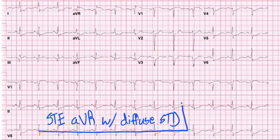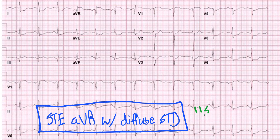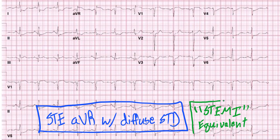Now everyone's eyes are darting to the different leads, and you may have noticed some of these findings. Although there are conflicting opinions on this term, people refer to this as a STEMI equivalent — ST elevation myocardial infarction equivalent — because it doesn't quite meet STEMI criteria, given that you don't have two contiguous leads with ST elevation, but it does have ST elevation in AVR with diffuse ST depressions.